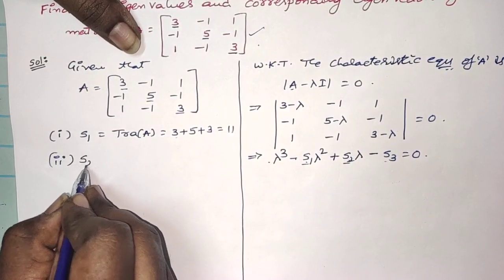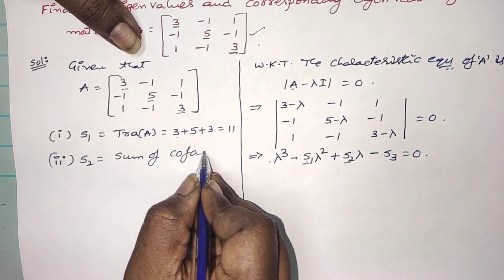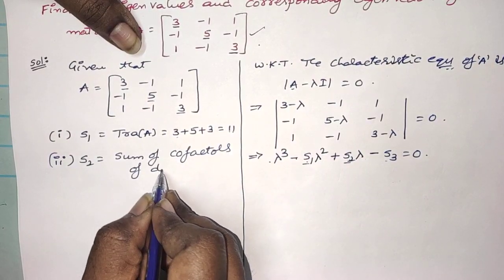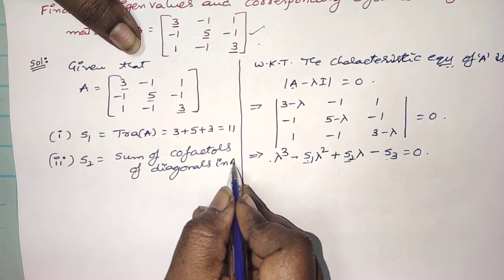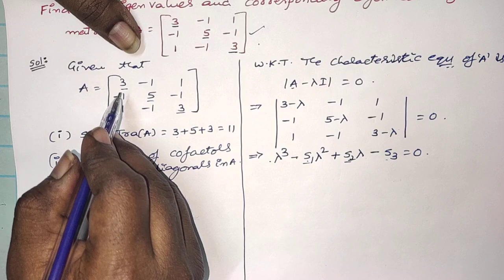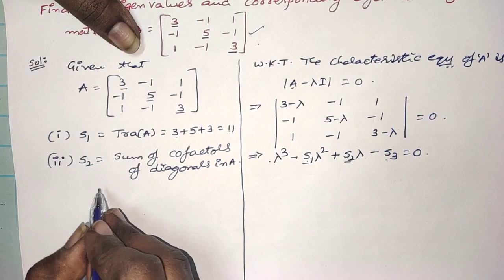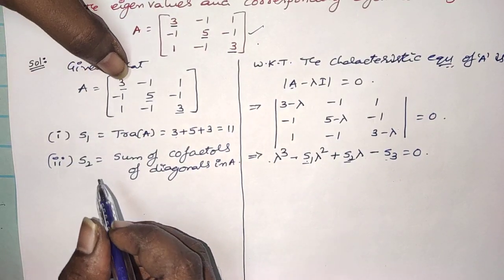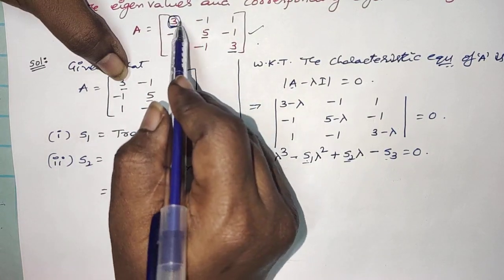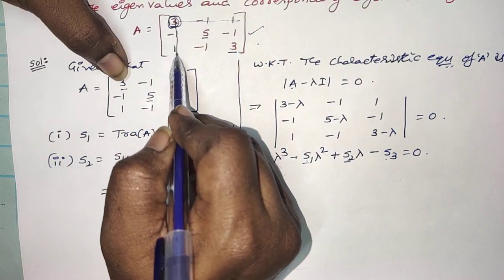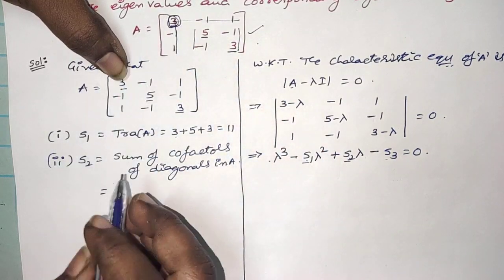What is S2? S2 is the sum of cofactors of the diagonal elements of matrix A. There are 3 diagonal elements, each with a cofactor. We have to write the cofactors and add them. For the cofactor of the first diagonal element, close the first row and first column; you get a 2 by 2 matrix.